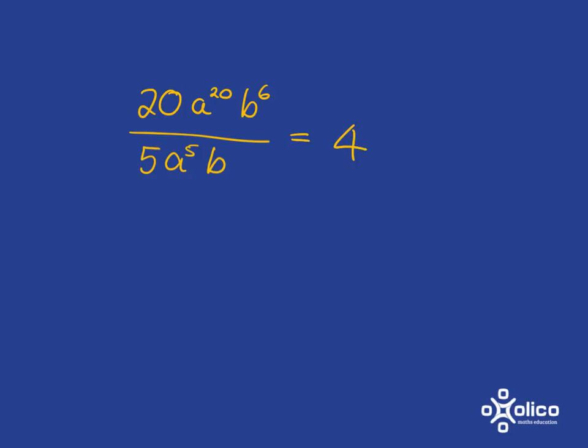Then here we've got a to the power of 20 divided by a to the power of 5. And we know how to deal with exponents when we're dividing. It's going to be a to the 20 minus 5.